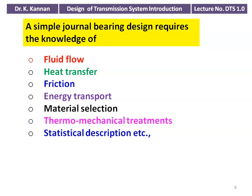In a journal bearing, lubrication flows between the journal and the shaft — hence the need for fluid flow concepts. Heat transfer is needed because friction generates heat. Energy transport is involved since power is transmitted. Material selection for the journal and shaft is required, as is thermomechanical treatment for the surface. All these subjects are required even for a simple journal bearing design.